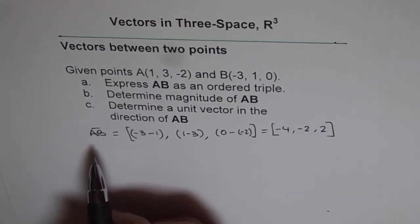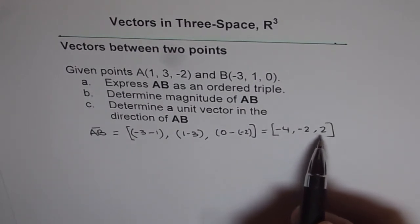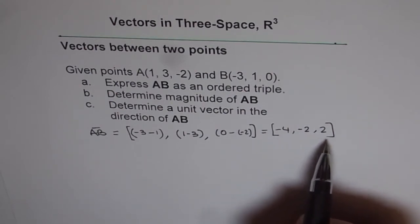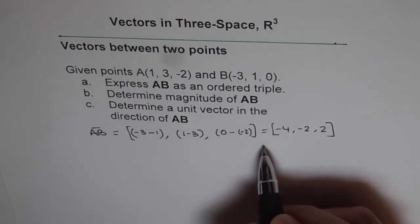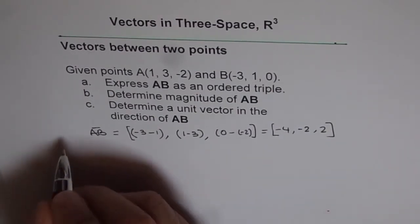So the vector AB can be written as minus 4, minus 2, 2 as an ordered triple. This is ordered triple form. These are the three direction numbers: minus 4 is along the x axis, minus 2 along y, and 2 along z axis. This is part A.